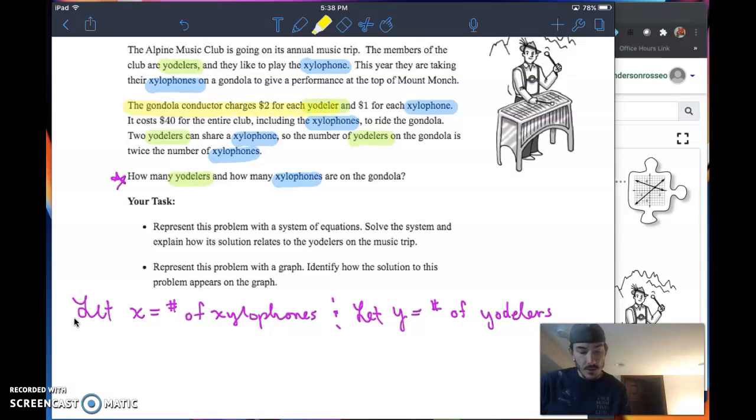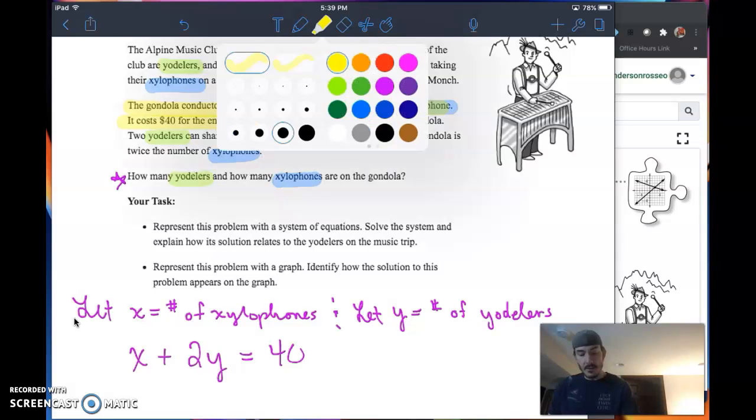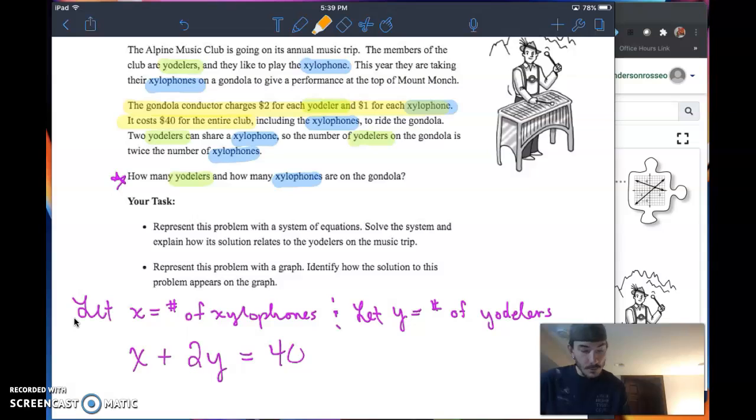The gondola conductor charges $2 for each yodeler and $1 for each xylophone, and it costs $40 for the entire club. So we've got two rates, we've got a total that tells me I want an equation in standard form. So $1 for each xylophone, that's x, plus $2 for each yodeler, 2y, and that's going to equal 40. Next, two yodelers can share a xylophone, so the number of yodelers is twice the number of xylophones. The number of yodelers is equal to twice the number of xylophones, y equals 2x.